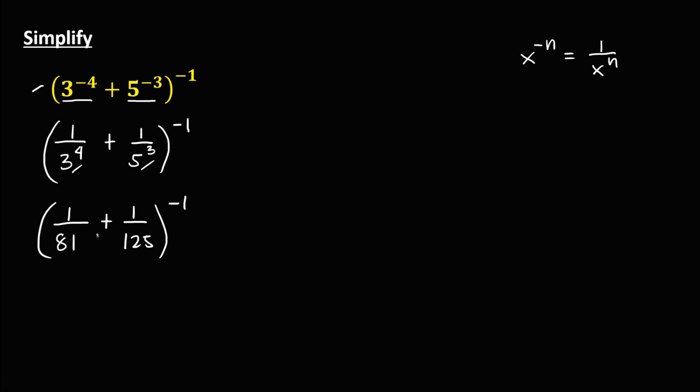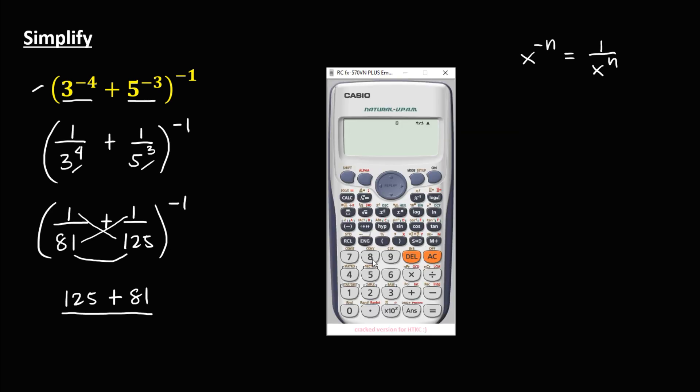When adding fractions, we can use the butterfly method. So we have 1 times 125, that's 125, plus 81 times 1, that's 81, over 81 times 125. 81 times 125 equals 10,125,